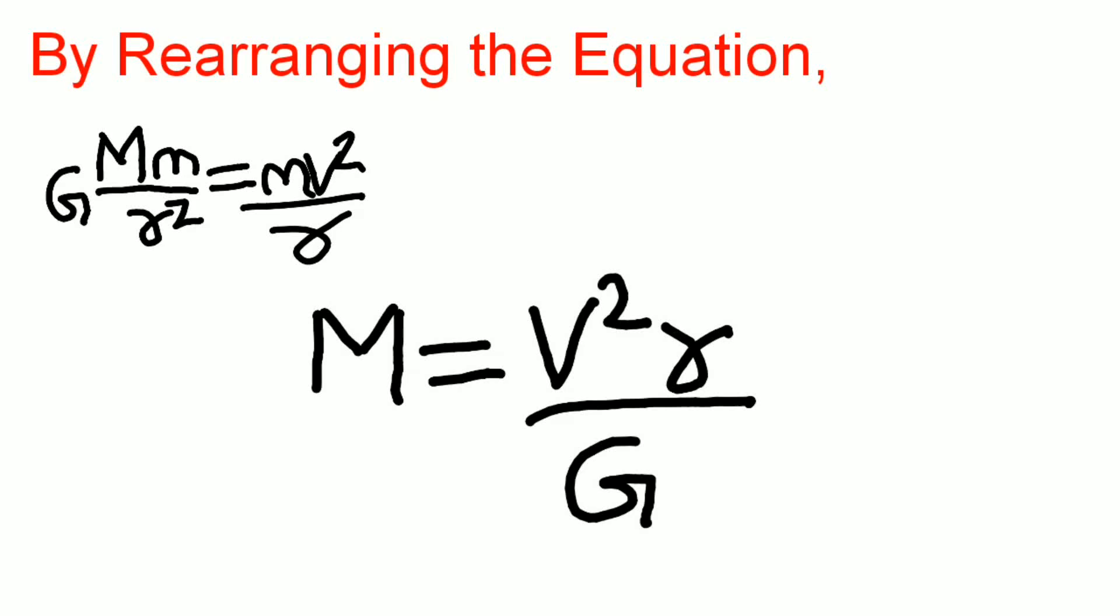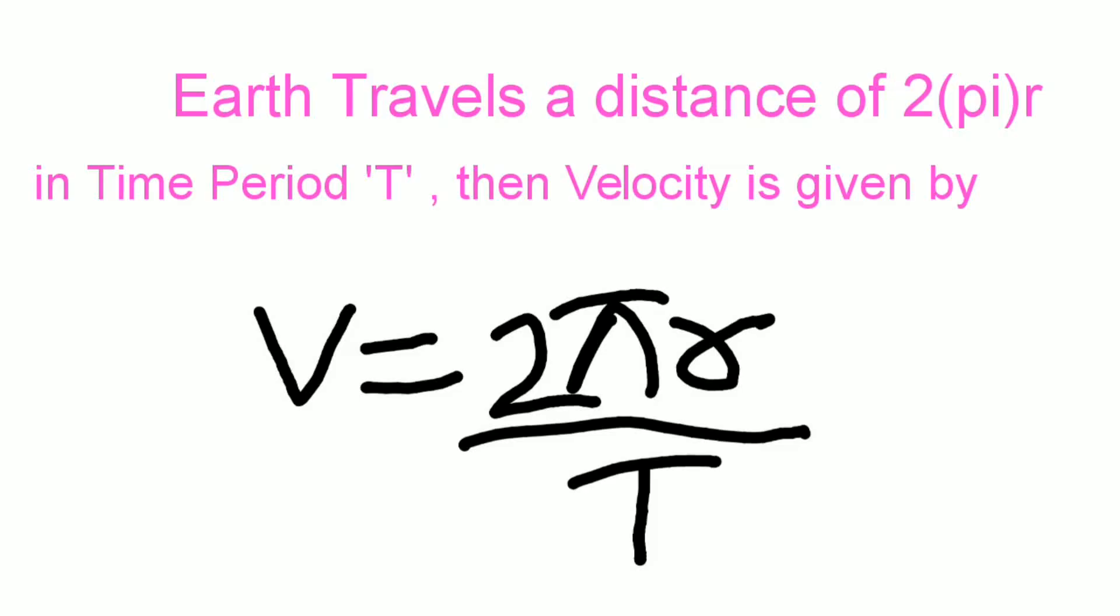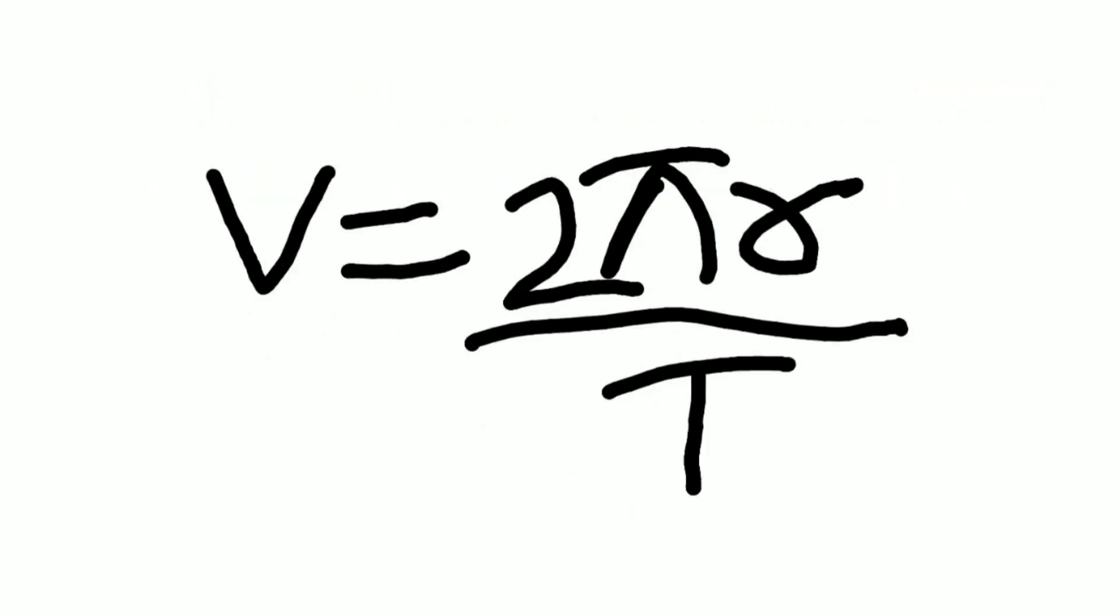By rearranging the equation, we get M = v²r/G. Since Earth travels a distance of 2πr in time period T, the velocity is given by v = 2πr/T.